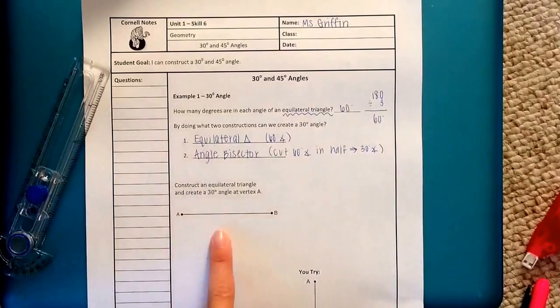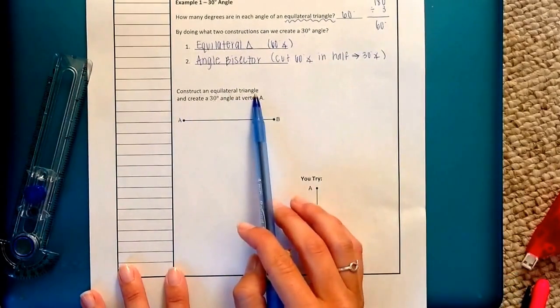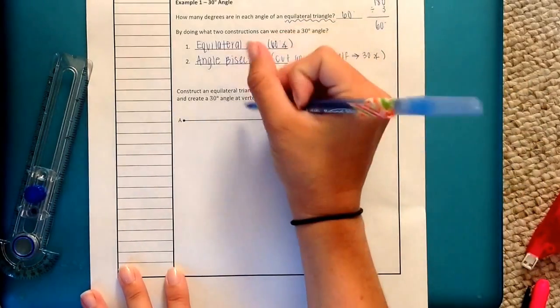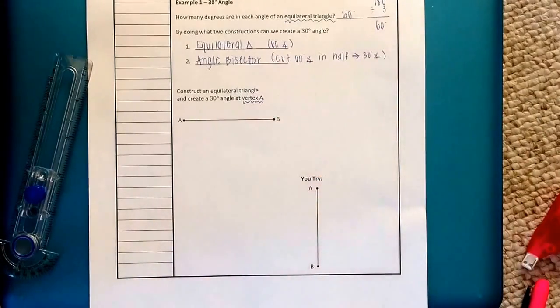You'll notice that I just used a little double arrow symbol. That means then. So we cut 60 degree angle in half then we get a 30 degree angle. We're going to do one together then you are going to try one on your own shortly after that. It says construct an equilateral triangle and create a 30 degree angle at vertex A. It's important that we recognize we do have to do this at vertex A because if you do it at B you lose credit.